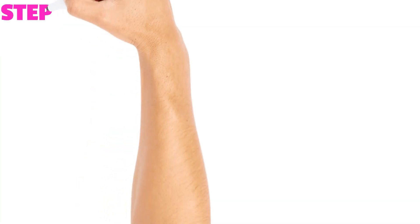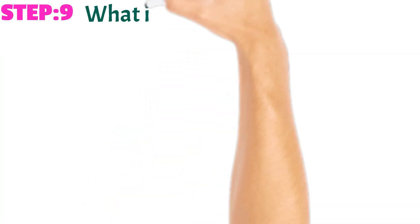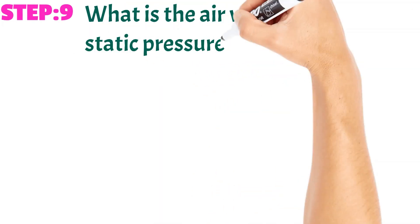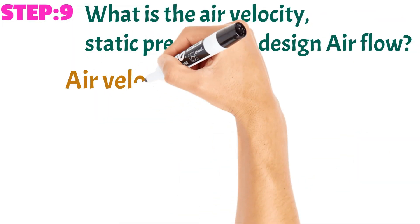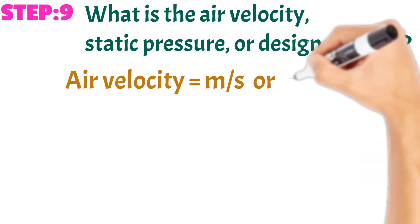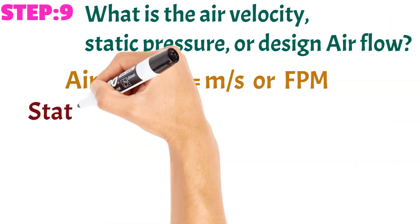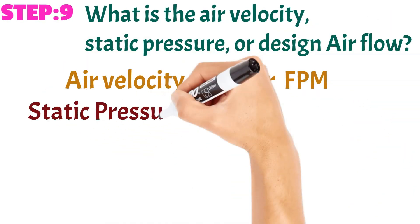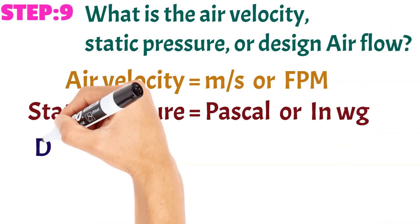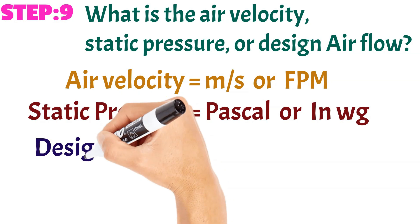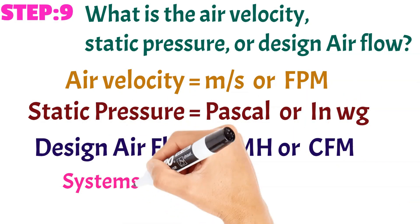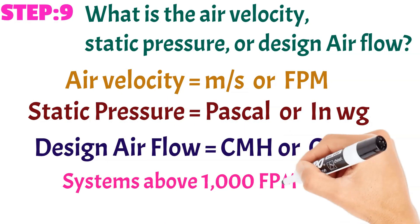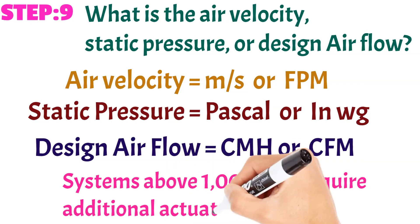Step number nine: What is the air velocity, static pressure, or design airflow through the damper? Air velocity equals meters per second or fpm. Static pressure equals pascal or inch of water gauge. Design airflow equals cmh or cfm.